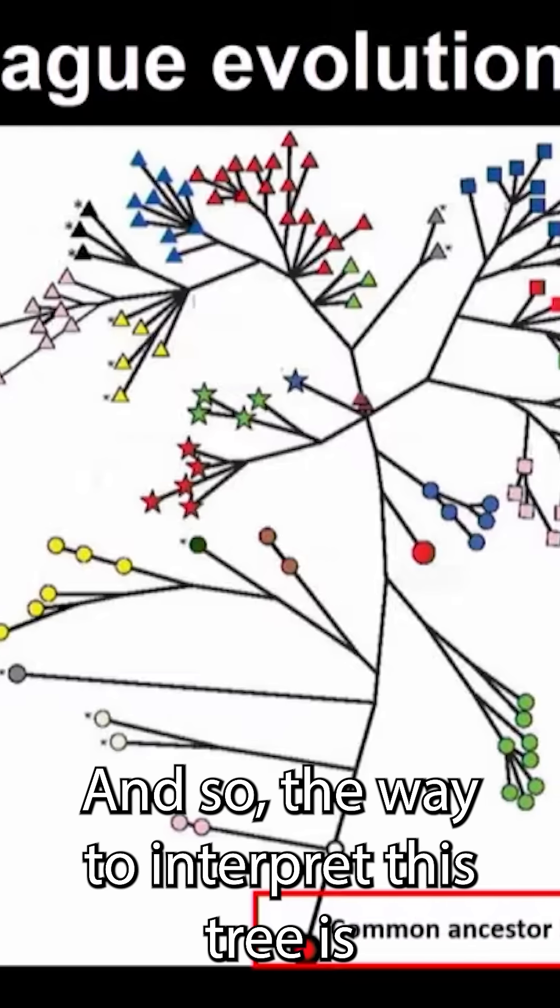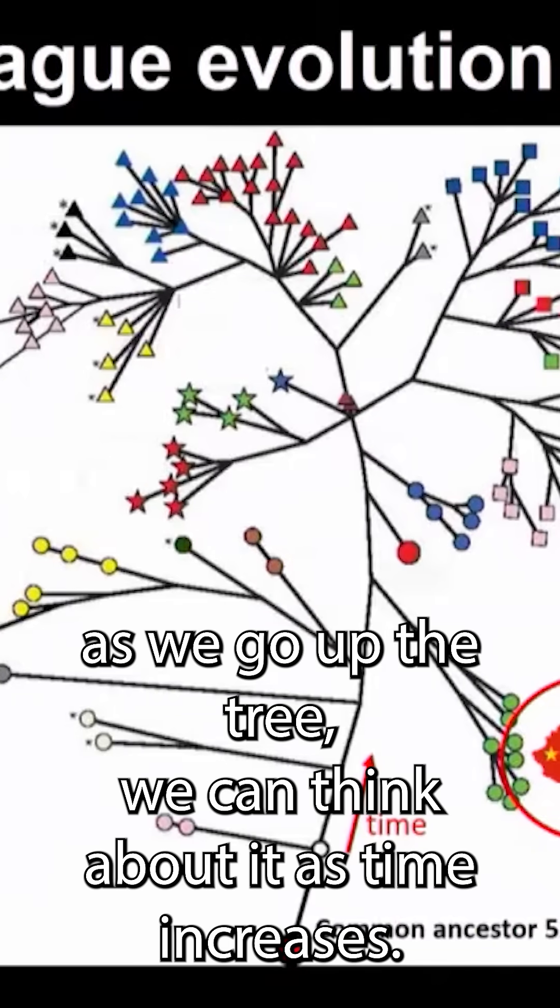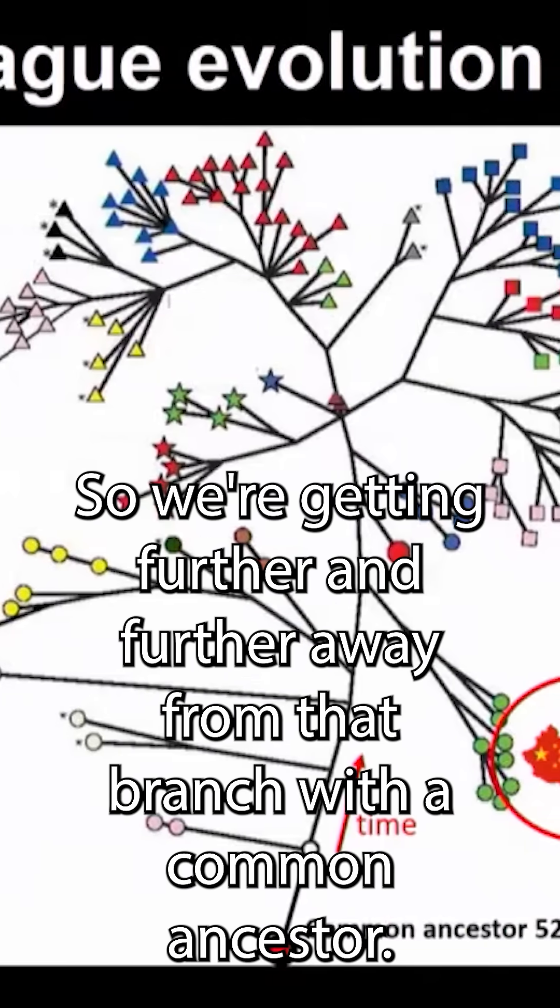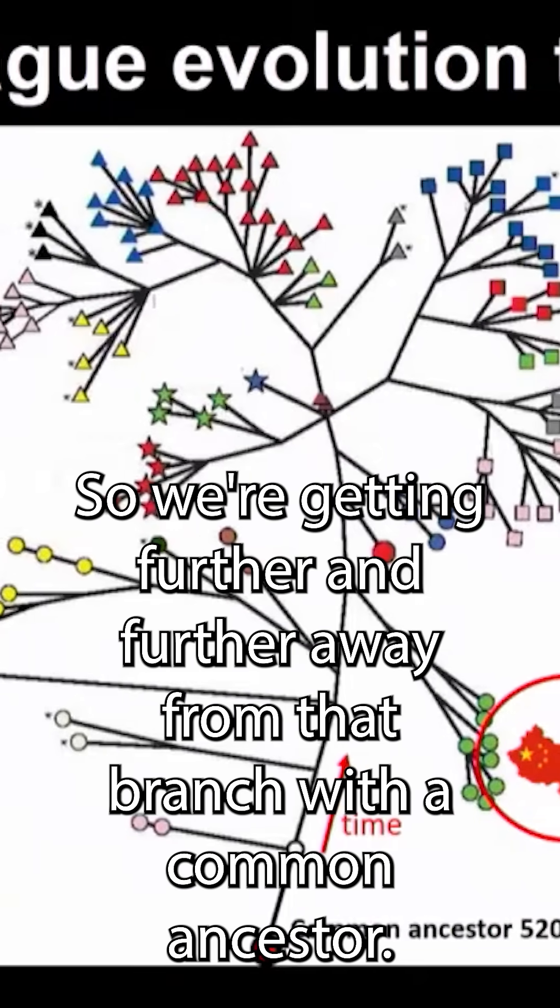The way to interpret this tree is as we go up the tree, we can think about it as time increases. So we're getting further and further away from that branch with a common ancestor.